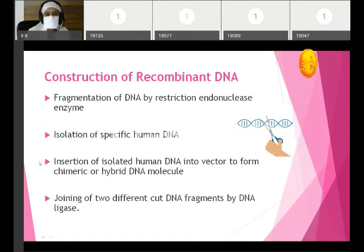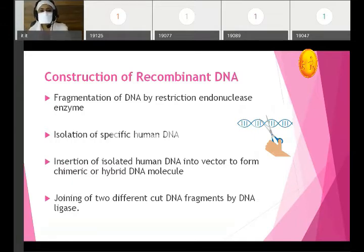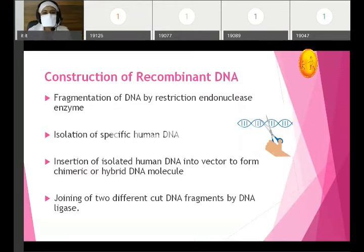This forms your recombinant DNA. The fourth and last step is joining of two different cut DNA fragments by DNA ligase. So there are four steps for construction of recombinant DNA: first, fragmentation by restriction endonuclease; second, isolation; third, insertion of the isolated fragment into the vector; and fourth, joining of the cut fragments to form recombinant DNA.